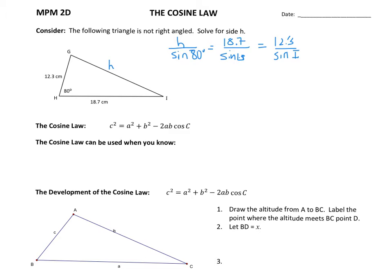So this is a problem because we don't have a complete ratio, and this is a case where the sine law is not going to work for us. Anytime you have a side, another side, and the angle given between them as the only three pieces of information, the sine law won't work and we use the cosine law.